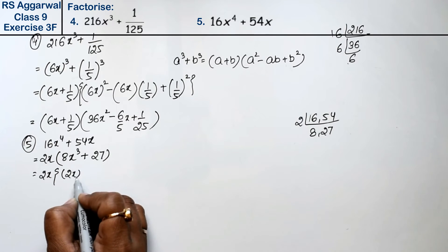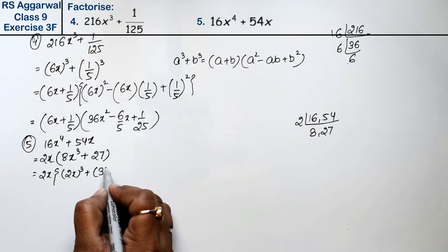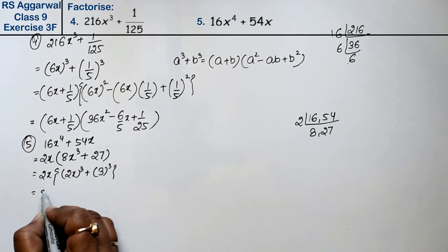2x times 2x whole cube plus 27 is 3 whole cube. So this is a cube plus b cube.